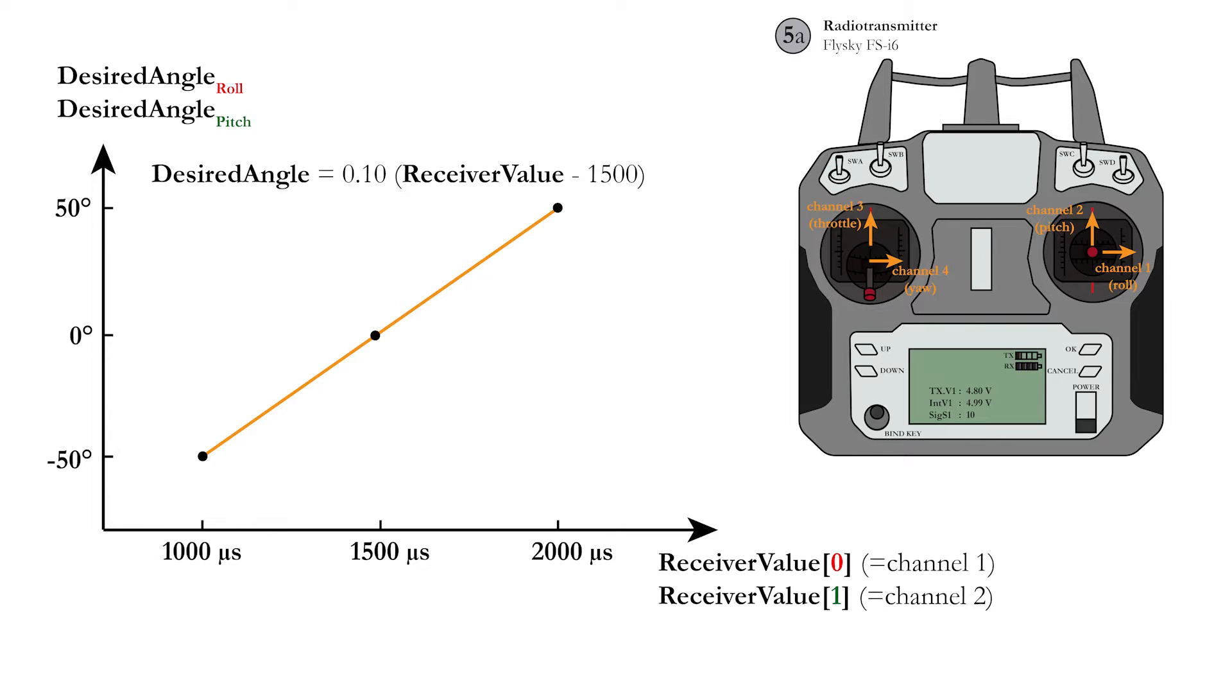For the angles, we will choose the minimal and maximal value for the roll and pitch to be minus and plus 50 degrees. This corresponds with the values of 1000 and 2000 microseconds on the radio transmitter, leading to the equation displayed on the screen. Remember that the roll angle comes from channel 1 of the radio transmitter and the pitch angle from channel 2.